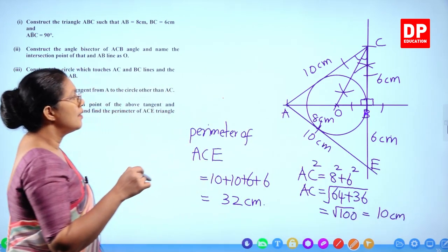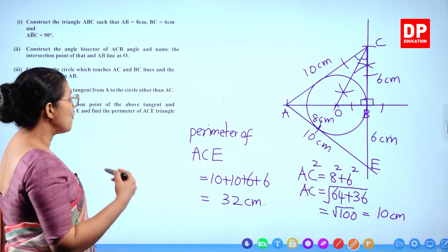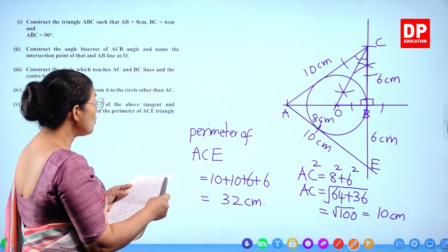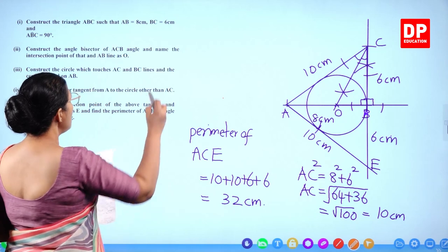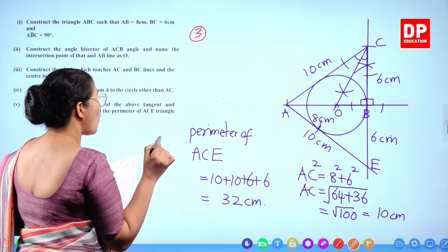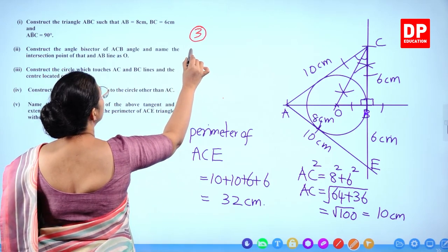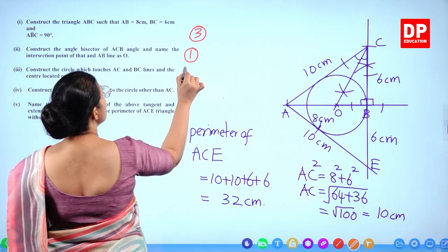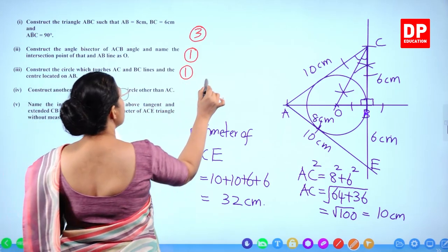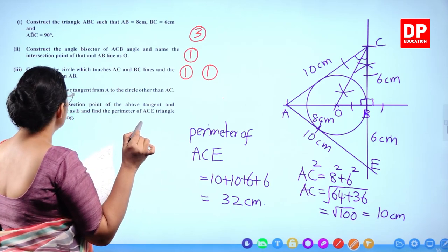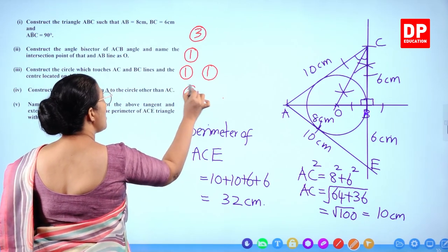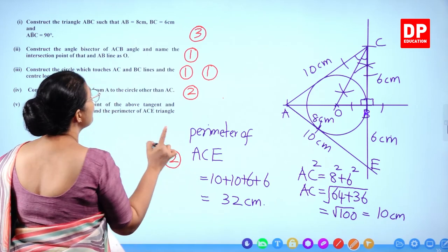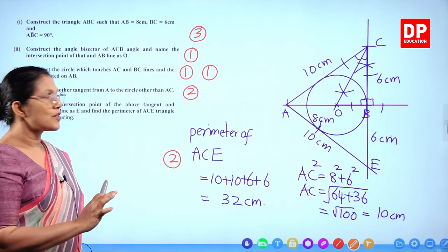The perimeter is found by calculation without measuring. For marks: 3 marks for constructing the triangle, 1 mark for the angle bisector, 1 mark for identifying center O, 1 mark for drawing the circle, 2 marks for the second tangent, and 2 marks for finding the perimeter — 10 marks for Question 8.